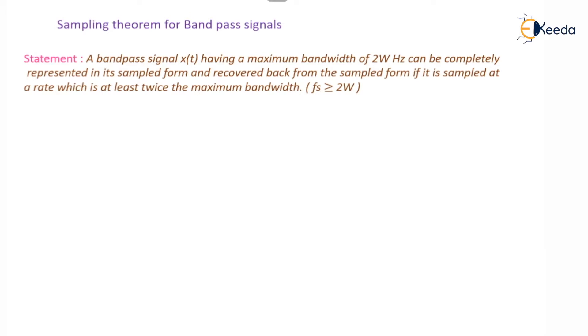That means mathematically we can say that Fs should be greater than or equal to 2 times W. This is the Nyquist criteria for sampling.